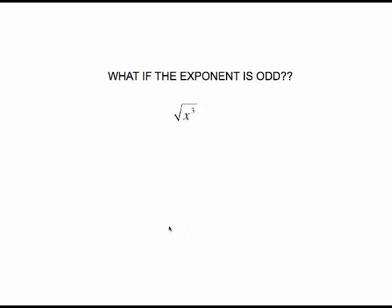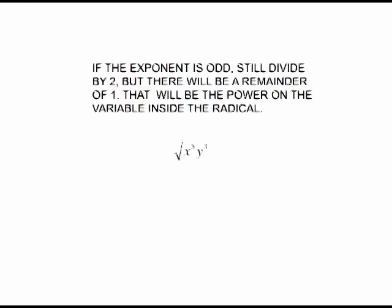What happens if the exponent is odd? Can we still use the rule of dividing by 2? Absolutely. x cubed is x times x times x. There's a pair of x's, so an x comes out, but I have a leftover x — giving us x times the square root of x. We get a leftover because the number is odd. When you have an odd exponent, divide by 2 but you'll get a remainder of 1, and that remainder is the power on the variable inside the radical.